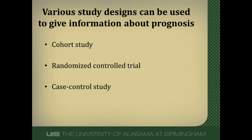We can get prognostic information from a variety of study designs: cohort studies, randomized control trials, and case control studies. These are listed in order of preference. It is preferable to use a cohort study for prognostic information, followed by a randomized control trial, followed by a case control study.